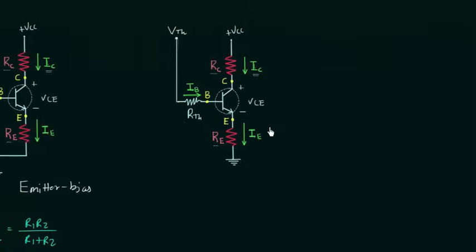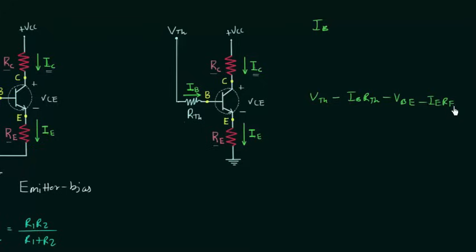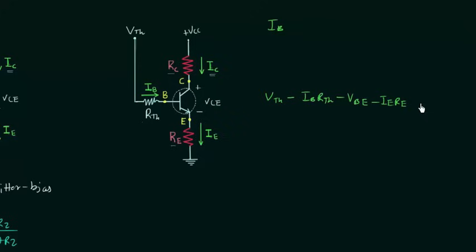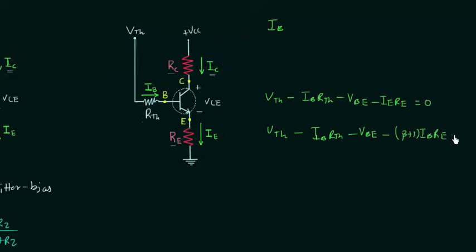In order to calculate collector current IC, we must first calculate the base current IB. To calculate base current, I will apply Kirchhoff's voltage law in the input loop. So we have VTH minus IB times RTH, minus VBE, minus IE times RE equal to zero. From this equation we can write the expression for IB.